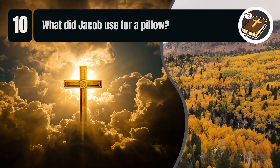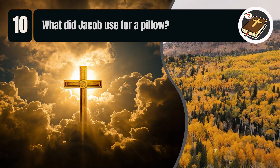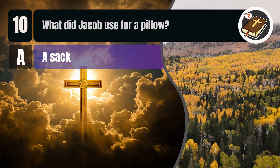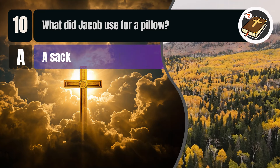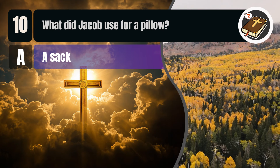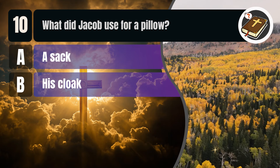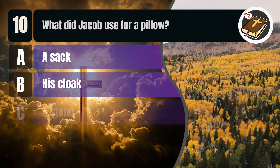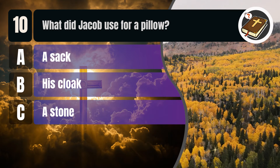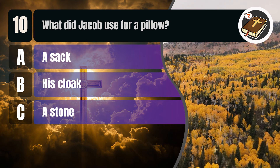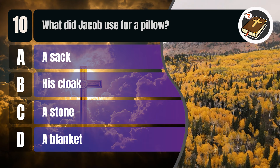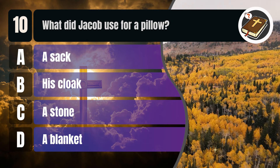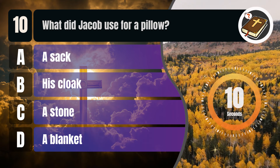Question 10. What did Jacob use for a pillow? A. A sack. B. His cloak. C. A stone. D. A blanket.